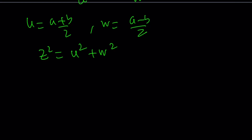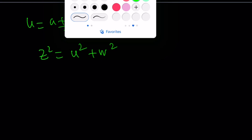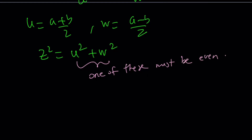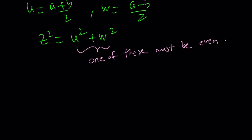My claim is that one of u and w must be even — at least one of them. Of course, if both w and u are even, then z is going to be even, like 6, 8, 10 as an example. How can I prove something like this? How about proof by contradiction?